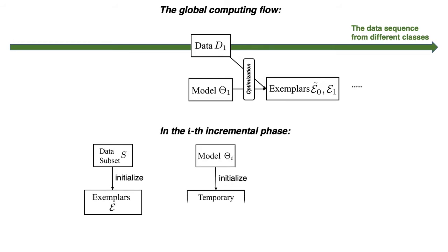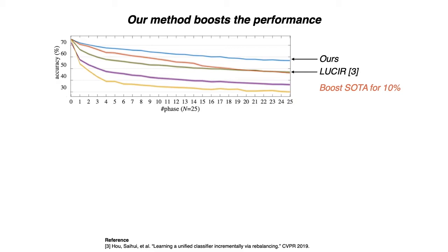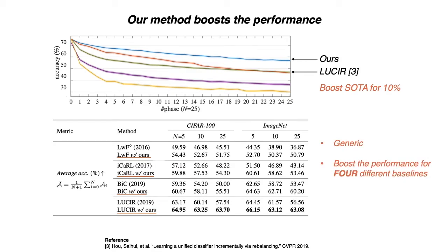In incremental phase i, we learn the mnemonics exemplars by solving a local bilevel optimization problem. In the figure, we can observe that compared to the state-of-the-art, our method boosts the accuracy in the 25th phase.